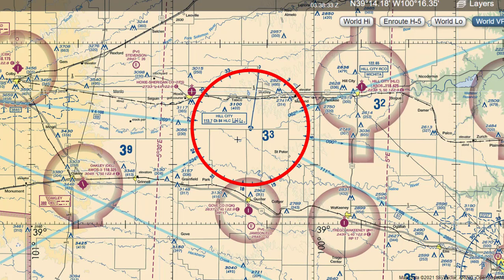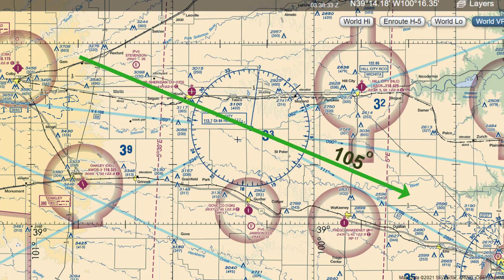The frequency for this VOR is 113.7. We will set NAV1 to this frequency. We are going to use the 105 degree radial as the course.